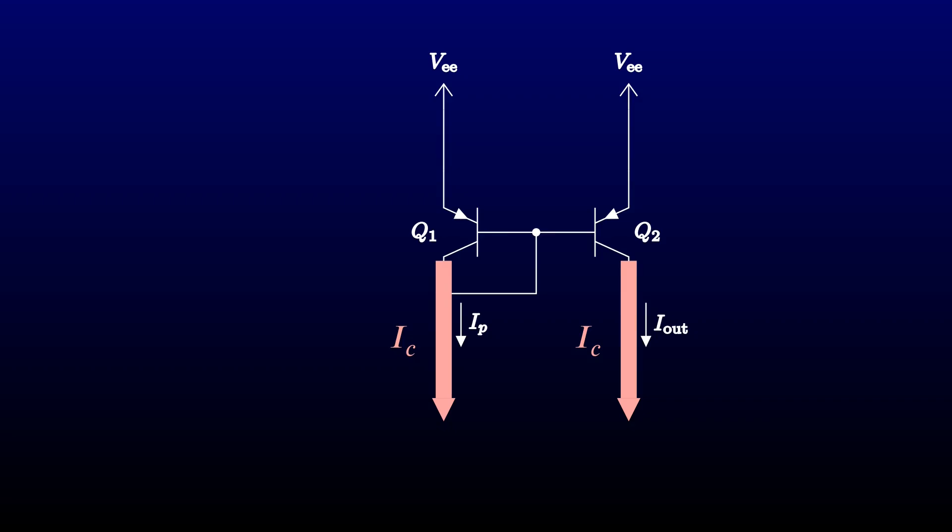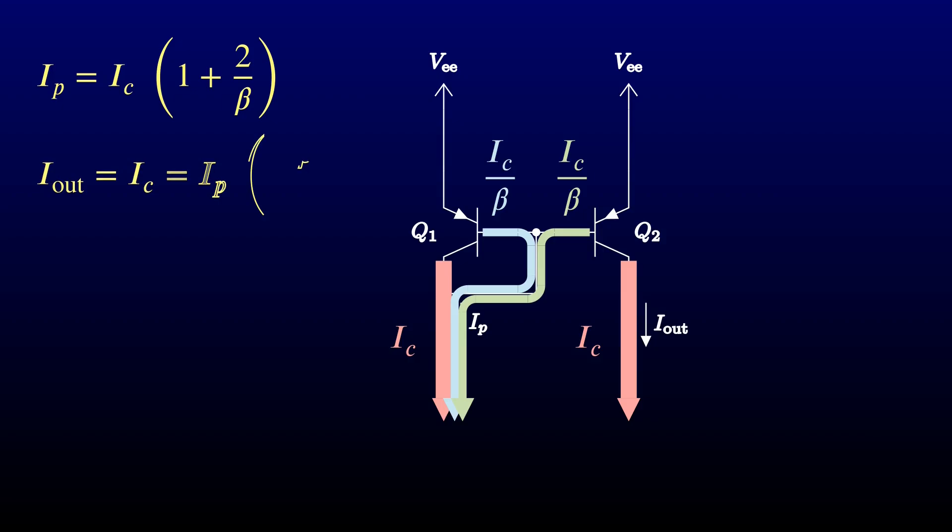But that's not the whole story. The programming current has to account for the base current of Q1, which is its collector current divided by its beta. It also includes the base current of Q2, also the collector current divided by beta. So the programming current is equal to the collector current times the quantity 1 plus 2 over beta. The output current is just the collector current, so it's the programming current times the quantity beta over beta plus 2. For a typical small signal beta of 100, this will give about a 2% imbalance between the currents. That's good enough for a lot of circuits. If it isn't good enough, we'll soon see ways to cancel out the imbalance.